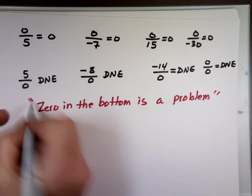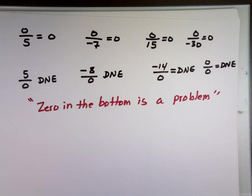Zero on the bottom is a problem. And make a song about it. You've got to think of a way to sing it nicely. Zero on the bottom is a problem. So if you've got zero on the bottom, it doesn't matter what the top is, you've got a problem. It can't be done.